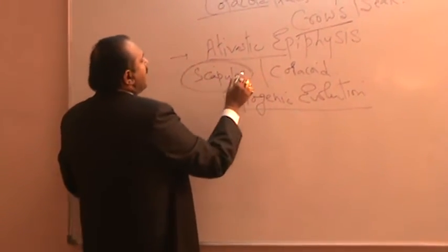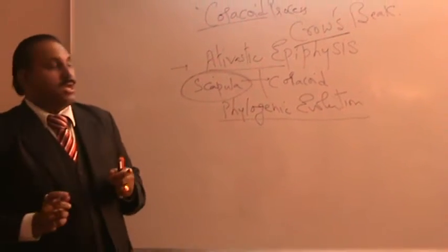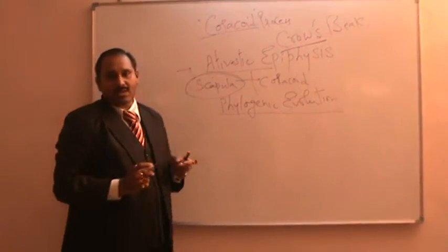Now scapula is the one bone which is having a coracoid process, acromial process. So that's why we ask about this coracoid process.